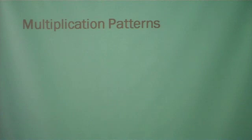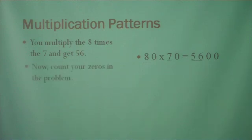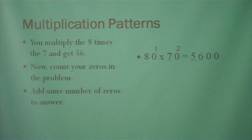The first thing we're going to look at are multiplication patterns. These are when we're multiplying powers of 10. You multiply the 8 times the 7 and you get 56. Now count your zeros in the problem — 1, 2. Add the same number of zeros to your answer — 1, 2. And it's as simple as that.